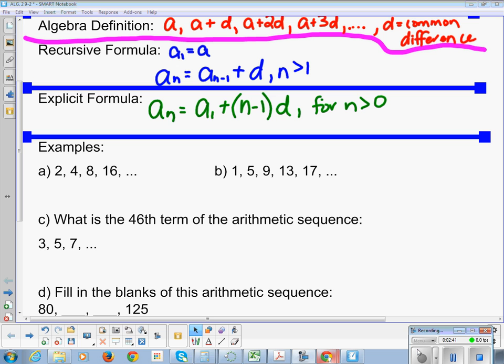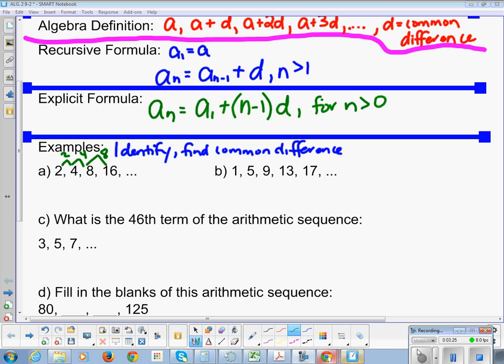All right, so let's apply this information to some examples. If I have a sequence 2, 4, 8, 16, I need to identify is this arithmetic or not. If it is, let's find the common difference. So we need to see, are we increasing by the same amount each time? For A, we are not, so there is no common difference. It's not arithmetic.